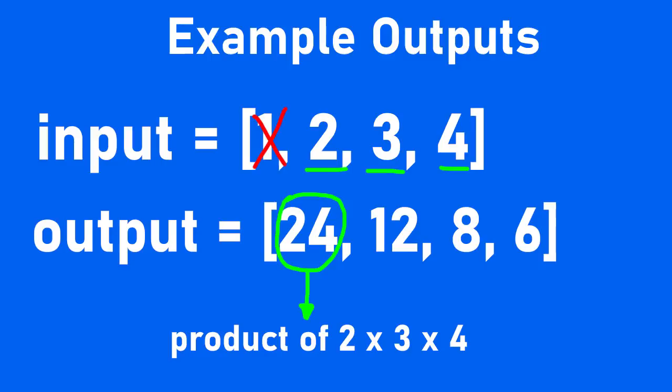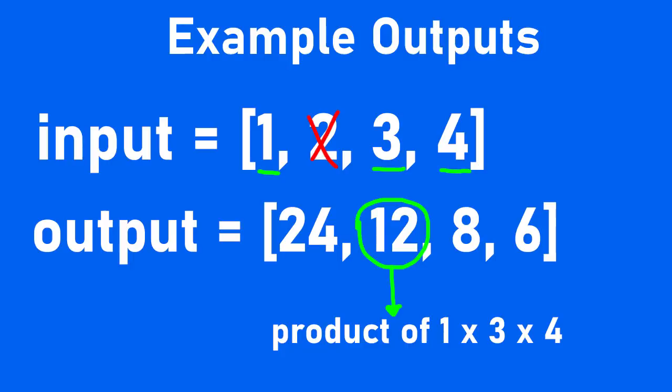So you can see in this example that the first element of the output array is going to be the product of everything in the input array but the first element — so the product of the second, third, and fourth elements. And the second element in the output will be the product of the first, third, and fourth elements, but not the second element of the input.